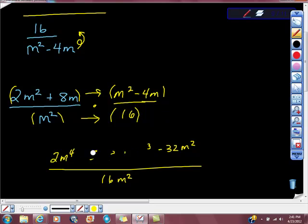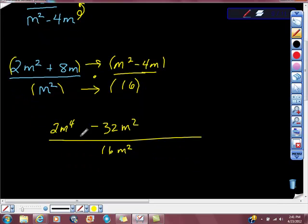Right, these two pieces cancel, which leaves us with 32m squared here, minus 32m squared. Can everybody see what's about to happen here? Let's see what happened here. So we're going to try to factor from here.